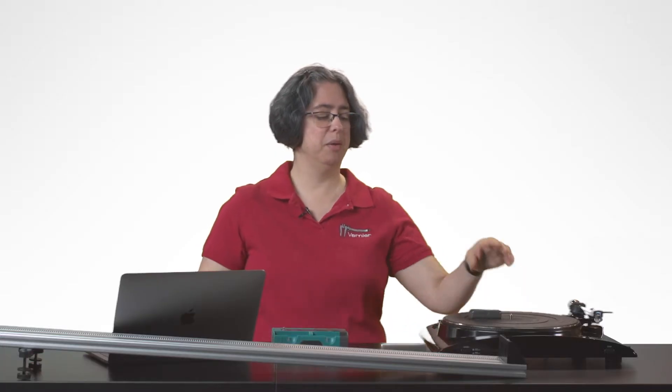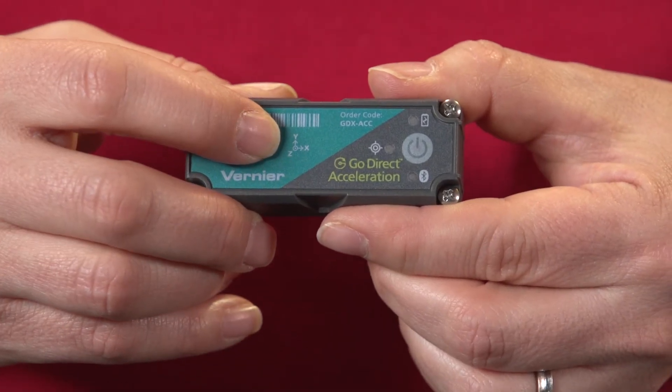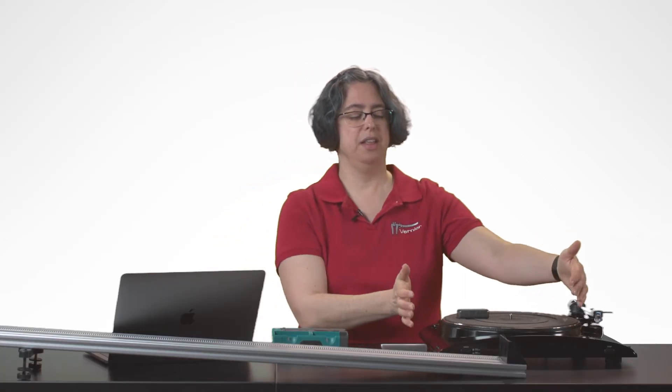In this case, I'm going to put my device onto a turntable. Again, the three axes are placed on the label so that you can see that if I'm going to look at rotation in this direction, I'm going to want to use the vertical axis, which is labeled z.